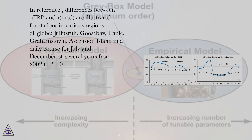In reference, differences between tau IRI and tau MED are illustrated for stations in various regions of globe: Julius Rue, Goose Bay, Thule, Gramstown, Ascension Island in a daily course for July and December of several years from 2002 to 2010.